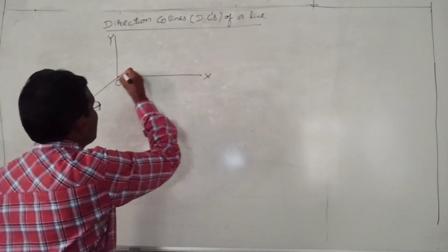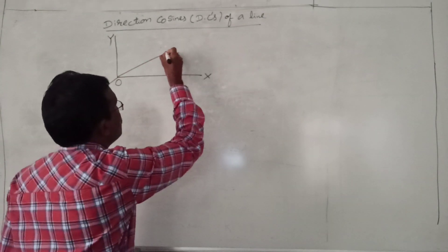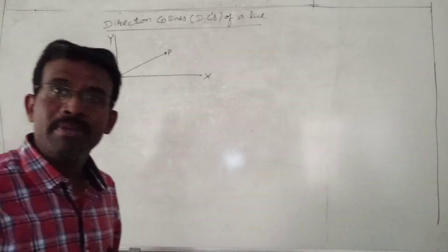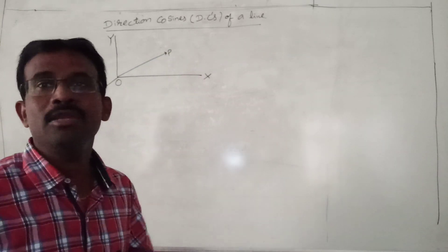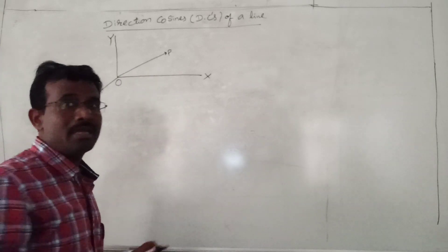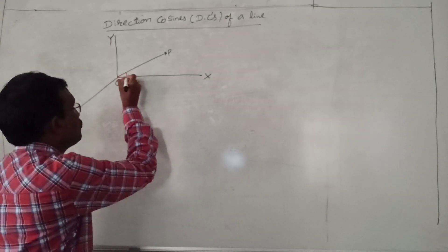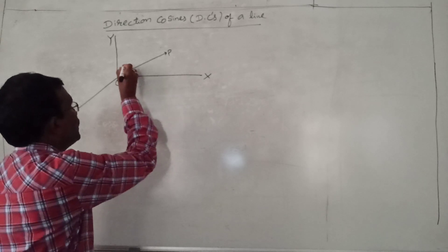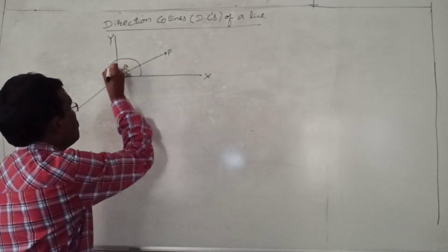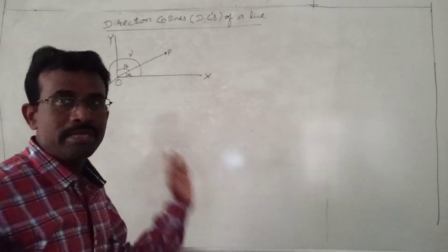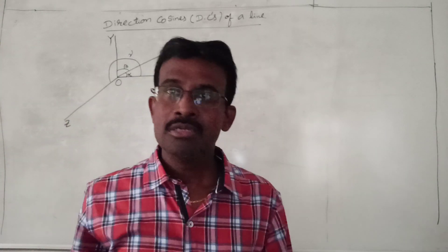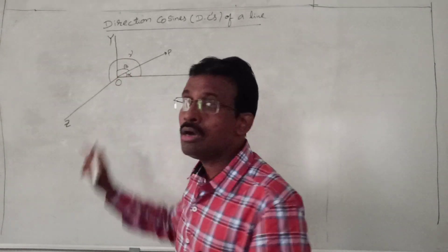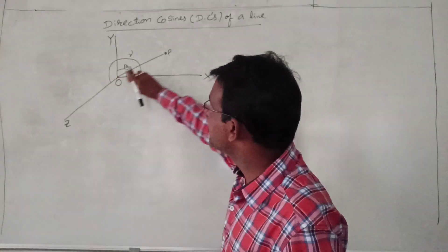In this XYZ plane, I am going to define a line OP. This OP is making angle alpha with the X axis, beta with the Y axis, and gamma with the Z axis in the positive direction. Then the cosine ratios of alpha, beta, gamma are called direction cosines of this OP line.